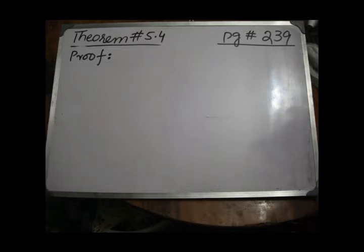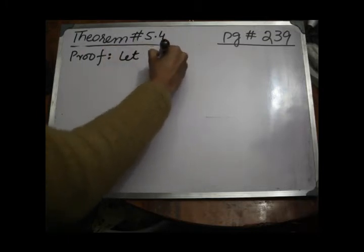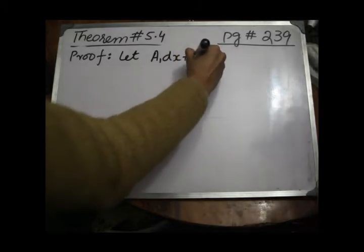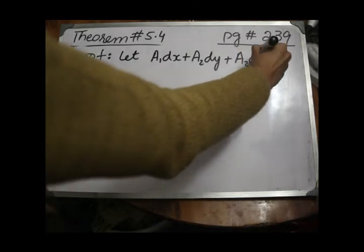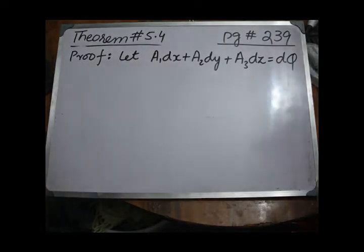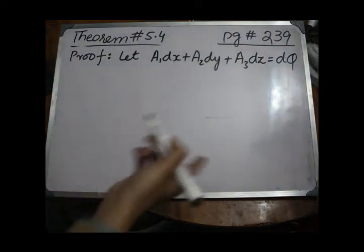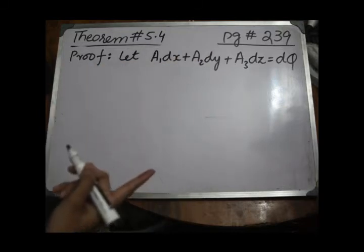Firstly, we suppose that a1 dx plus a2 dy plus a3 dz is an exact differential, meaning a1 dx plus a2 dy plus a3 dz equals d-phi.